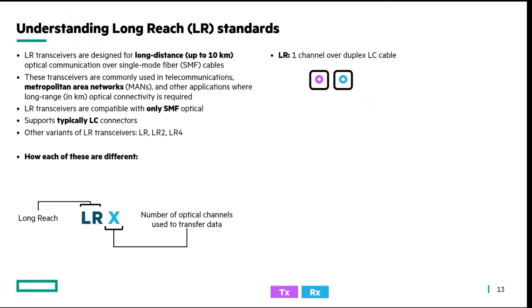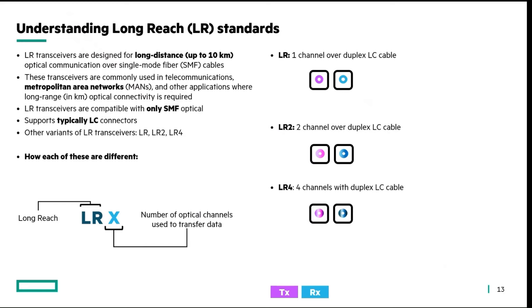LR-1 is a single channel over duplex LC cable. LR-2 is two channels over the same duplex LC cable. Unlike SR2 which used an MPO-12 connector with two separate links, for LR-2 there are two channels over duplex LC cable — meaning two different wavelengths are multiplexed over a single fiber thread and transmitted through it. We'll talk about this multiplexing and the difference between both in coming sessions.